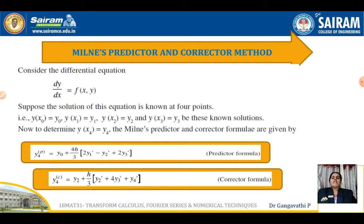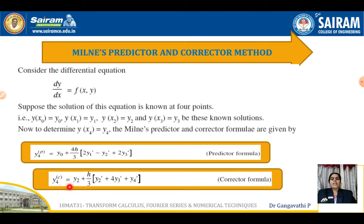As the name itself indicates, we will predict the value of y₄ using the Predictor Formula: y₄ = y₀ + (4h/3)(2y₁' − y₂' + 2y₃'). That predicted value is then checked and corrected using the Corrector Formula: y₄c = y₂ + (h/3)(y₂' + 4y₃' + y₄'). This is called the Corrector Formula.